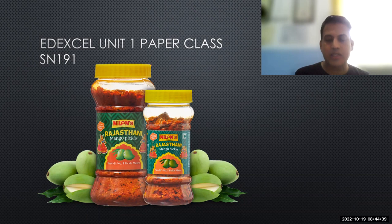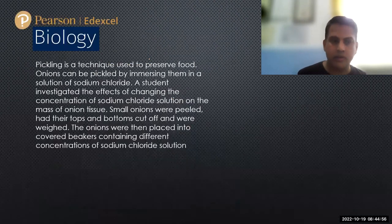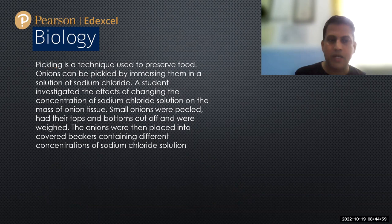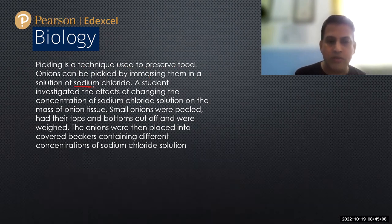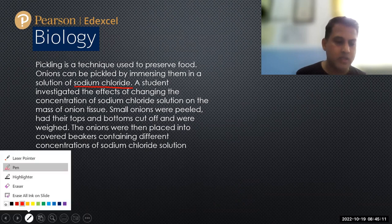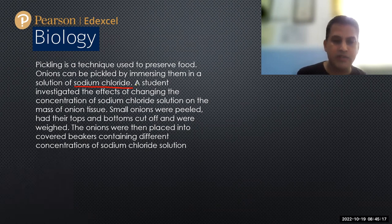In this question, you can see on the screen a pickle, which is a type of food that is preserved, mostly fruits and vegetables, so we can keep them a long time without refrigeration. The question states: pickling is a technique used to preserve food. Onions can be pickled by immersing them in a solution of sodium chloride.